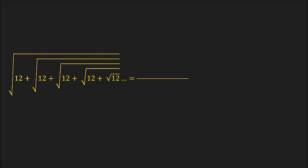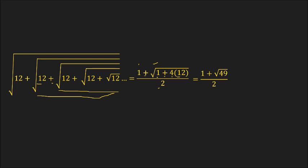Let me show you another example. For the square root of 12 plus the square root of 12 plus the square root of 12, repeated infinitely, it's 1 plus the square root of 1 plus 4 times 12, all over 2. Continuing the process: 4 times 12 is 48, plus 1 is 49. So we have 1 plus the square root of 49, all over 2. The square root of 49 is 7, so 1 plus 7 is 8, divided by 2 equals 4.